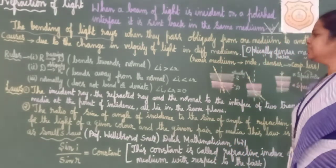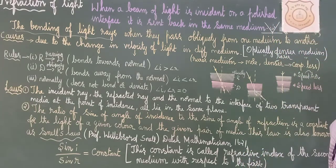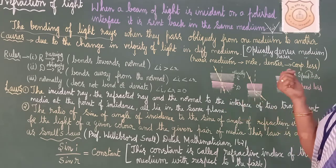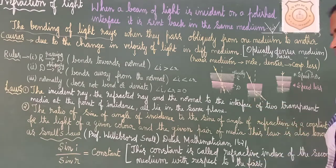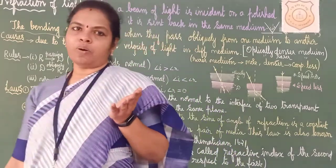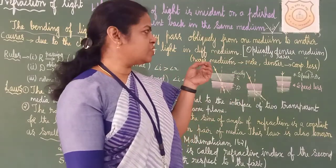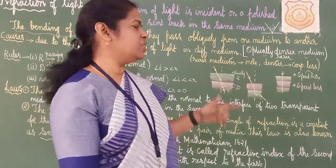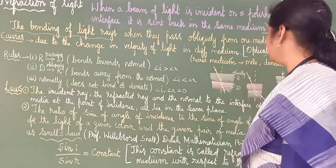Optical density is defined as the ratio of the intensity of light falling upon a material to the intensity transmitted — that is called optical density. The word 'optically' is very important: you should write 'optically denser medium' and 'optically rarer medium.' In rarer medium the speed of light is more; in denser medium the speed of light is less. These two points are very clear.